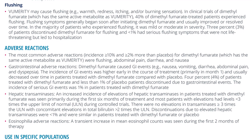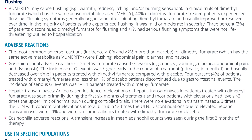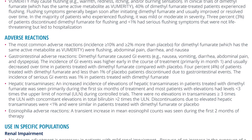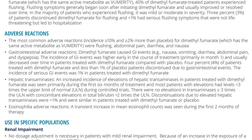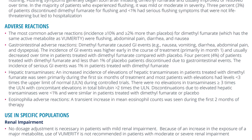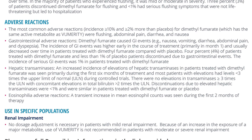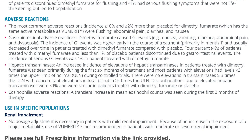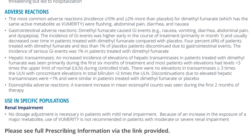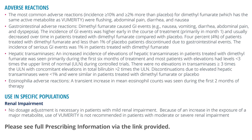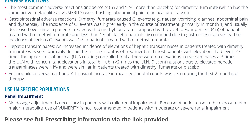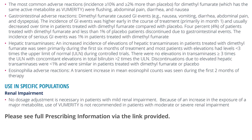Adverse reactions: The most common adverse reactions — incidence ≥10% and ≥2% more than placebo — for dimethyl fumarate, which has the same active metabolite as Vumerity, were flushing, abdominal pain, diarrhea, and nausea. Dimethyl fumarate caused GI events including nausea, vomiting, diarrhea, abdominal pain, and dyspepsia. The incidence of GI events was higher early in the course of treatment, primarily in month one, and usually decreased over time. 4% of patients treated with dimethyl fumarate and less than 1% of placebo patients discontinued due to gastrointestinal events. The incidence of serious GI events was 1% in patients treated with dimethyl fumarate.